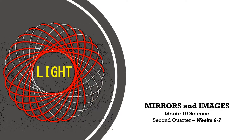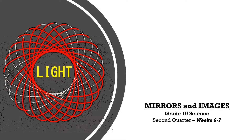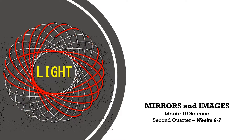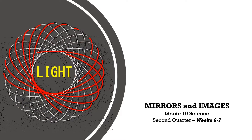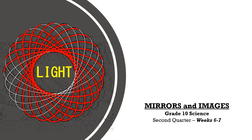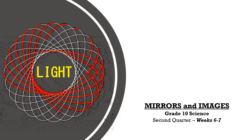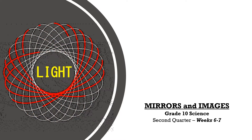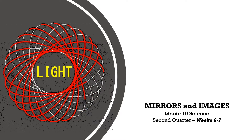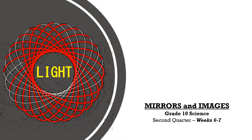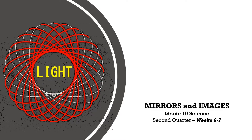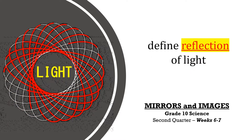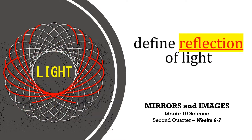As we start with this second part, you will be able to use the law of reflection to describe and explain how images are formed by mirrors. You will also be able to solve problems pertaining to the position and magnification of images formed by mirrors. Our learning target for this video lesson is to define reflection of light.